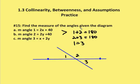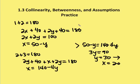We can use any one or two of these equations to solve for one of the variables. Let's use the first two: angle 1 plus angle 2 is equal to 180 degrees, and angle 2 plus angle 3 is equal to 180 degrees. Rewriting, 2x plus 40 represents angle 1, and 2y plus 40 represents angle 2, so angle 1 plus angle 2 is equal to 180 degrees.